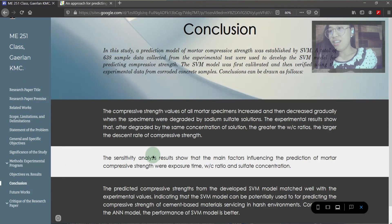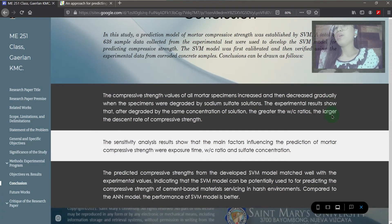Throughout the study, researchers have concluded that the compressive strength values of all materials' specimens increased and then decreased gradually when the specimens were degraded by sodium sulfate solutions. After degraded by the same concentration of solution, the greater water-to-cement ratio is the larger descent rate of compressive strength. Sensitivity analysis results show that the main factors influencing the prediction of compressive strength were exposure time, water-to-cement ratio, and sulfate concentration. And lastly, compared to the ANN model, the performance of the SVM model is better since predicted compressive strength matched well with the experimental values.